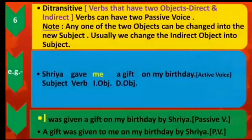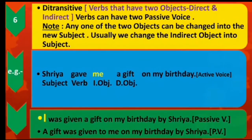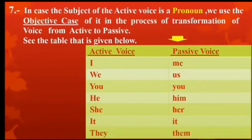Point 6: The ditransitive verbs can have two passive voices, where any one of the objects — direct or indirect — can be changed into the new subject. Usually, we change the indirect object into subject. Point 7: In case the subject of the active voice is a pronoun, we use its objective case in the passive voice. See the table given below.